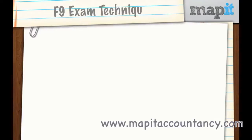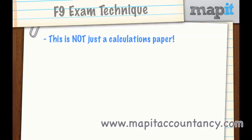Before we look at any specific syllabus areas, I want to just talk about the exam technique that we'll need to bear in mind as we go through this course. The first thing you need to realise about F9 is that it's not just a calculations paper. People think of F9 and think calculations — weighted average cost of capital, business valuations. That is the case, so you do have to do the calculations, but there are actually more marks often for the discussion parts, so you must know the theory for F9.